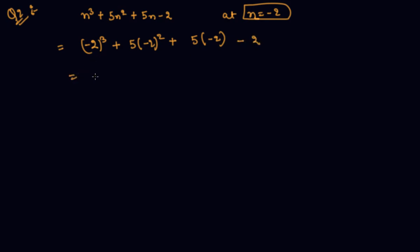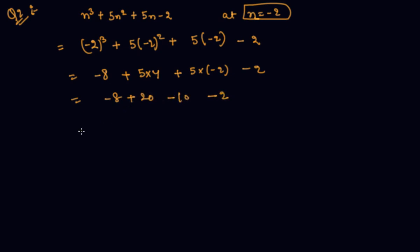Minus 2 cubed will be minus 8, this will be 5 into 4 which is 20, and this will be 5 into minus 2 which is minus 10, then minus 2. So this is minus 8 plus 20 minus 10 minus 2, which comes out to be 0.